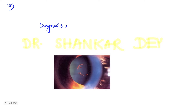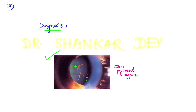Question number 18: An image was given and the question was direct — what is the diagnosis? As you can see, there is deposition of iris pigment over the anterior lens capsule. This is iris pigment deposition over the anterior lens capsule due to blunt trauma or concussion injury. This is nothing but Vossius ring.